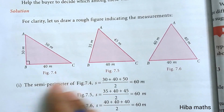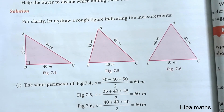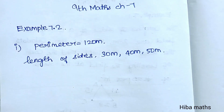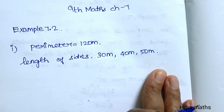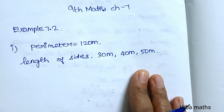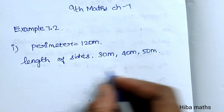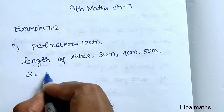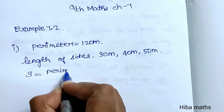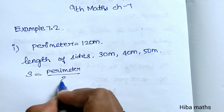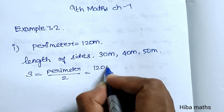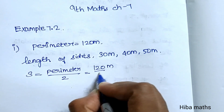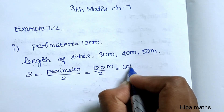If you have a diagram, you can find the area from it. For the first subdivision, we can find the readings. Perimeter is 120 meters. Heron's formula is used. S is equal to the perimeter divided by 2, so 120 divided by 2 equals 60 meters.